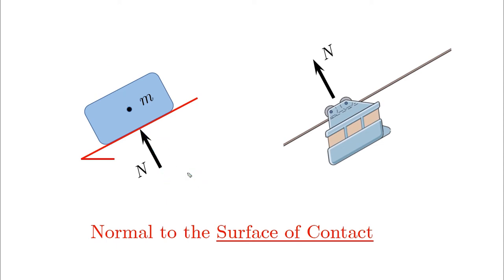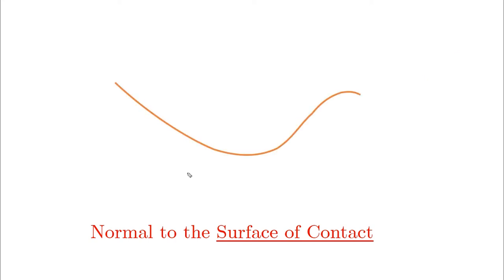How about if we have a particle that moves within a curve according to the tangential and normal coordinates? Well, in this case, the normal force acts by default along the normal direction. And as you can see again here, it always acts to prevent the object from falling down.